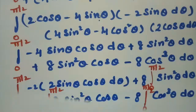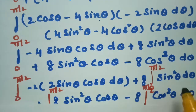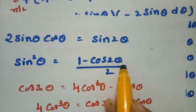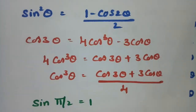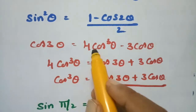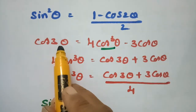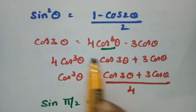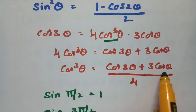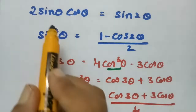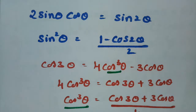I will use certain formulae: in place of 2 sin θ cos θ I write sin 2θ; in place of sin² θ I write (1 minus cos 2θ)/2. For cos³ θ, using the identity cos 3θ equals 4 cos³ θ minus 3 cos θ, I get cos³ θ equals (cos 3θ plus 3 cos θ)/4. I will use all these formulae for cos³ θ, sin² θ, and 2 sin θ cos θ.